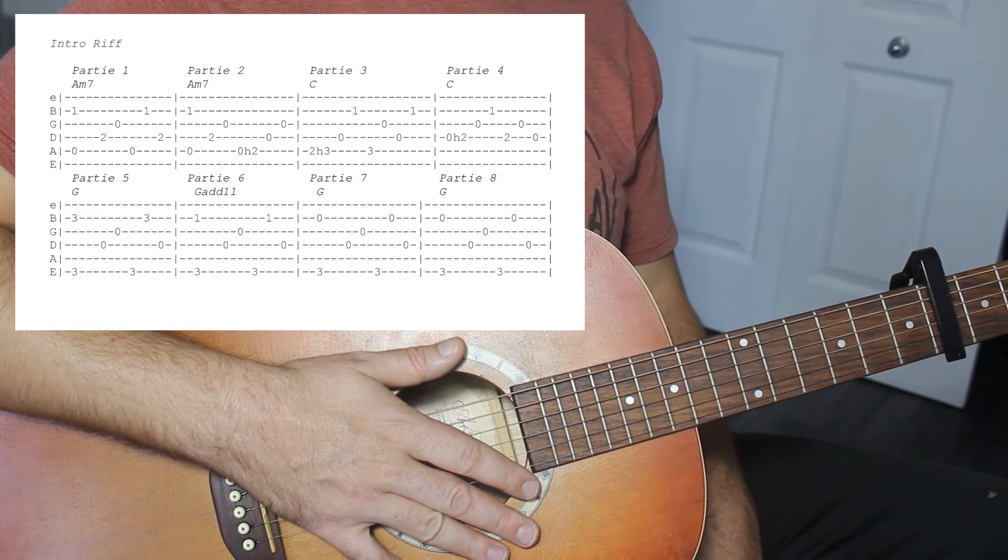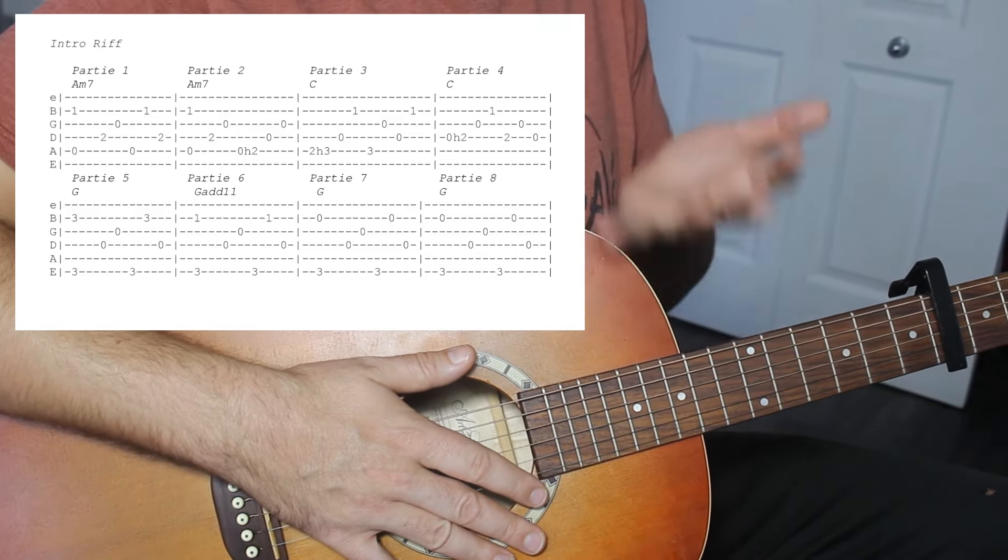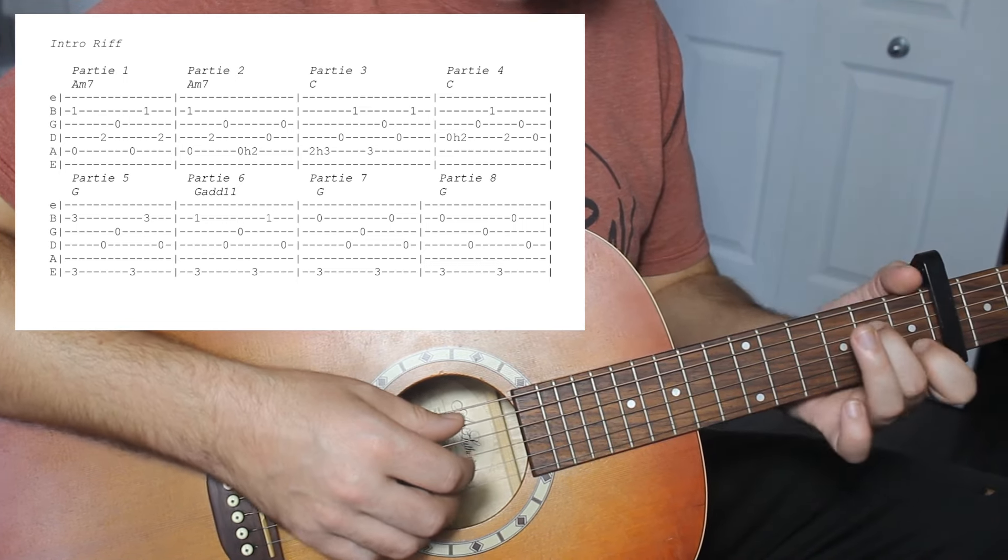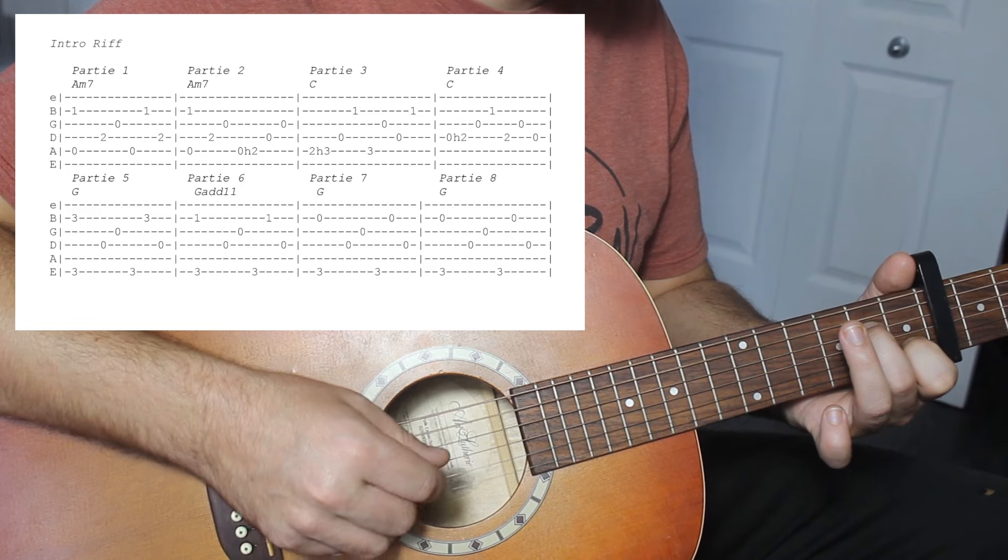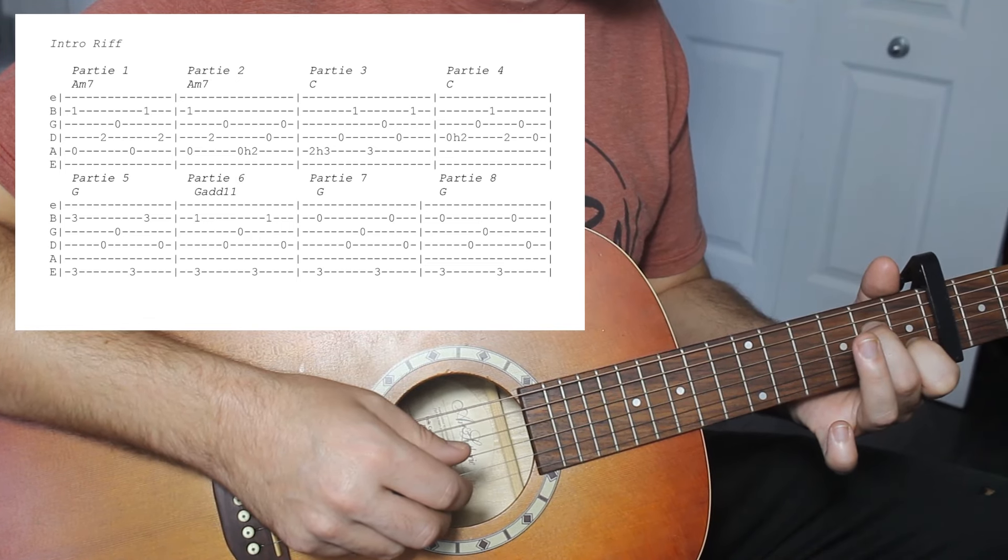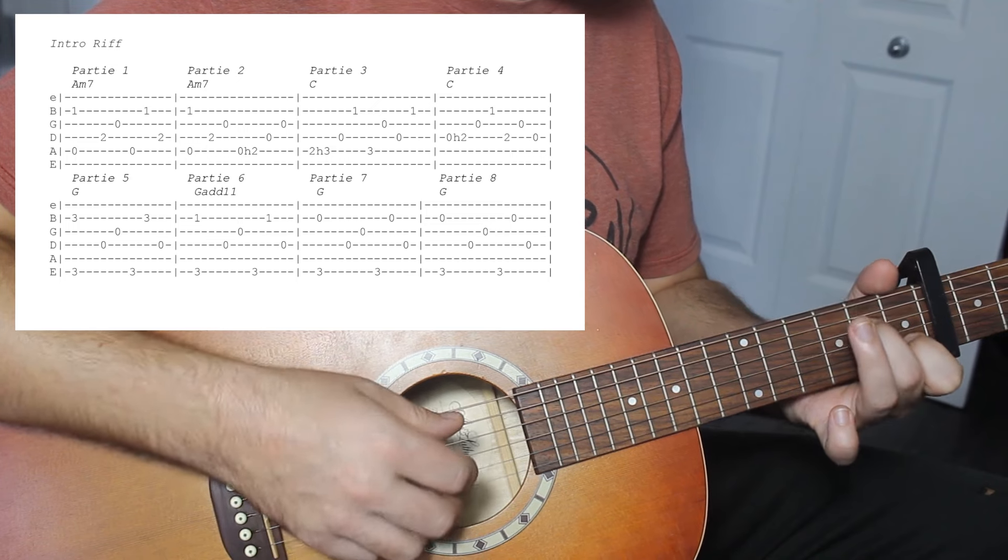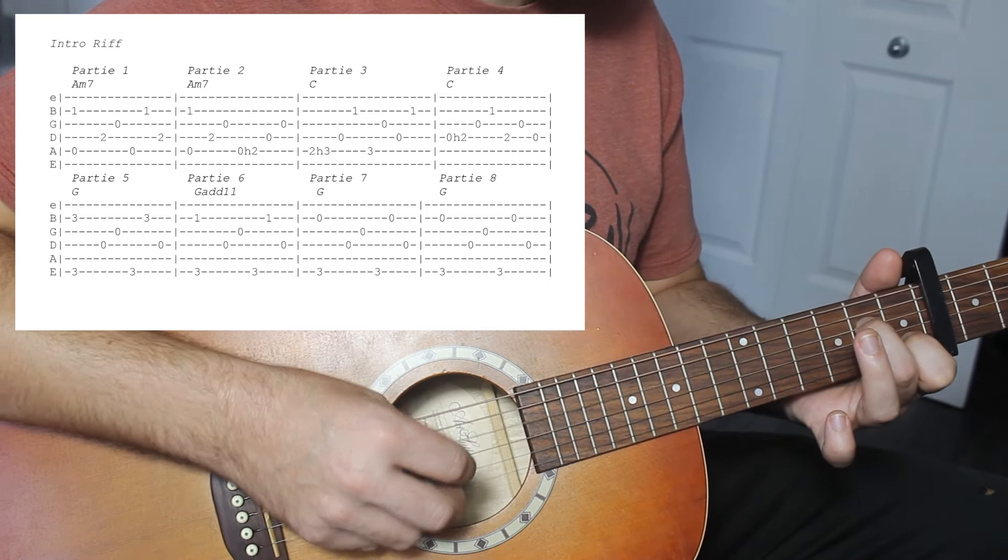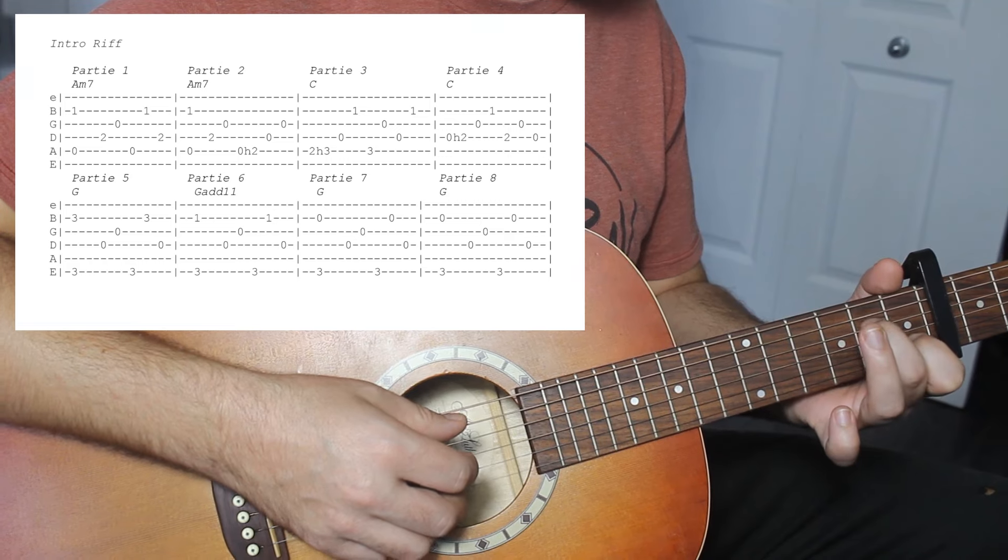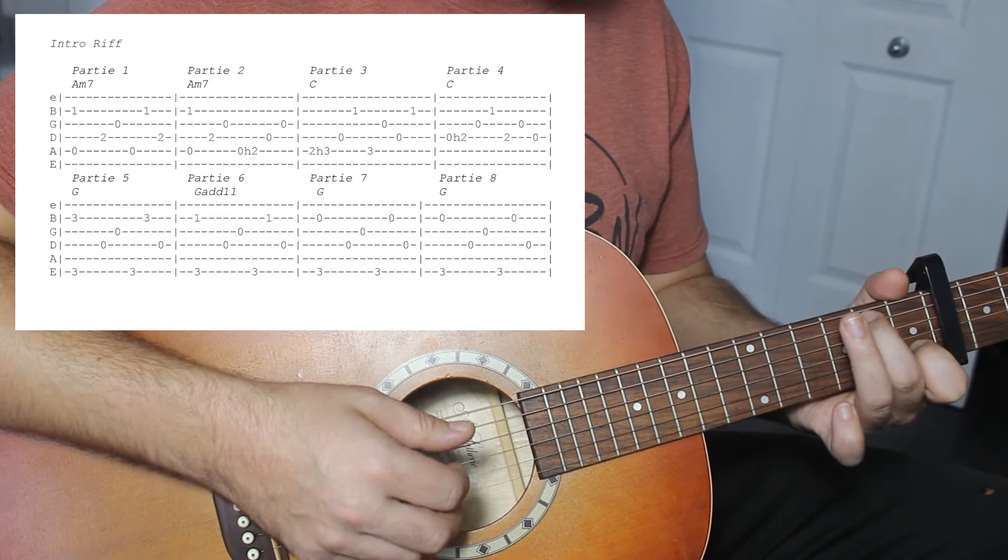Parfait. Maintenant, on va ajouter les riffs. On va faire la partition étape par étape. Dans le fond, on fait ce pattern-là général. Mais vous allez voir qu'on insère des variantes. Puis, on revient dans le pattern. Am7. Première partie. Comme vous voyez à l'écran. Ça, on le faisait déjà. Ensuite, deuxième partie. Deuxième partie. On commence par le pattern. Maintenant, je fais partie 1 et partie 2.